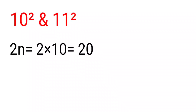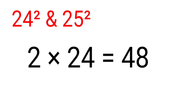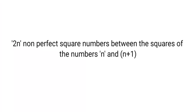Similarly, between 10² and 11², n = 10, so there are 2×10 = 20 non-square numbers. Between 24² and 25², there are 2×24 = 48 non-square numbers. In general, there are 2n non-perfect-square numbers between the squares of n and n+1.